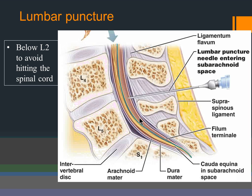A lumbar puncture is shown here between L4 and L5, below the end of the cord. You only see thin nerve fibers there; the chances of hitting them are low because they move out of the way. You can then withdraw CSF or inject anesthetic fluid. You never do it above L2 because you would definitely hit the cord, which could cause paralysis.